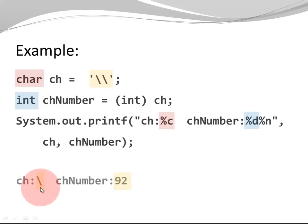When I print out the result, it prints as a single backslash. So, this is the escape sequence representing a single backslash, and by the way, the corresponding number is 92.